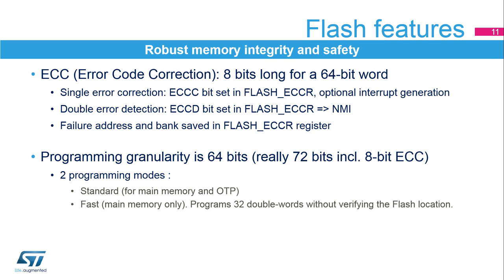In the case of a single error, it is corrected. The ECCC bit is set in the flash ECC register, and an interrupt is generated if it is enabled. In the case of a double error, it is detected but not corrected. The ECCD bit is set in the flash ECC register, and a non-maskable interrupt is generated. When an ECC error is detected, the failure address and associated bank are saved in the flash ECC register.